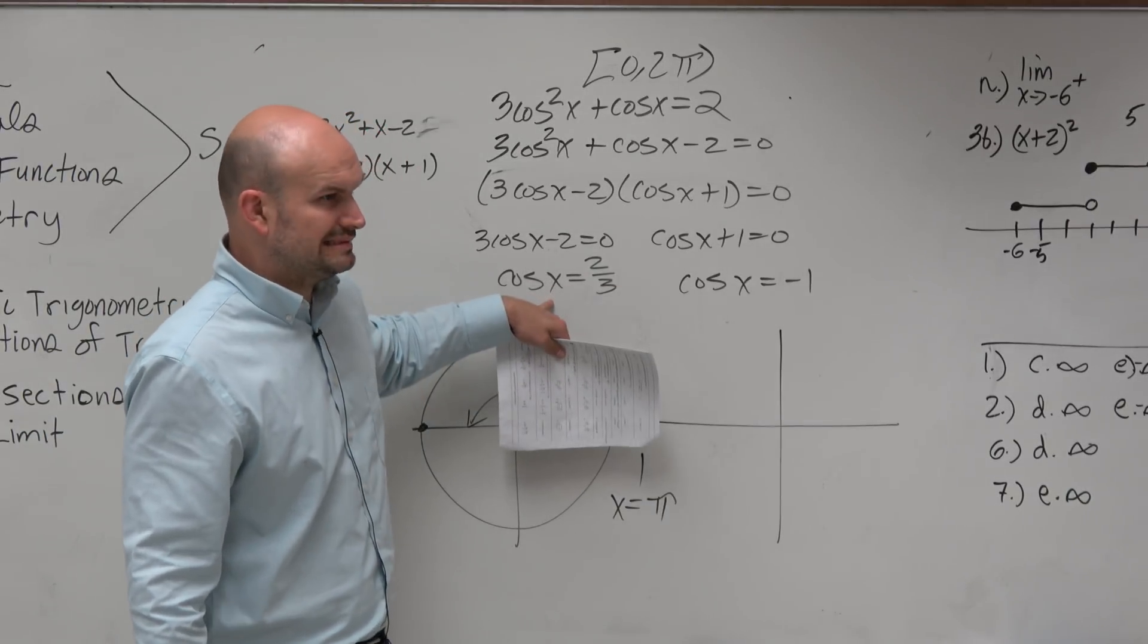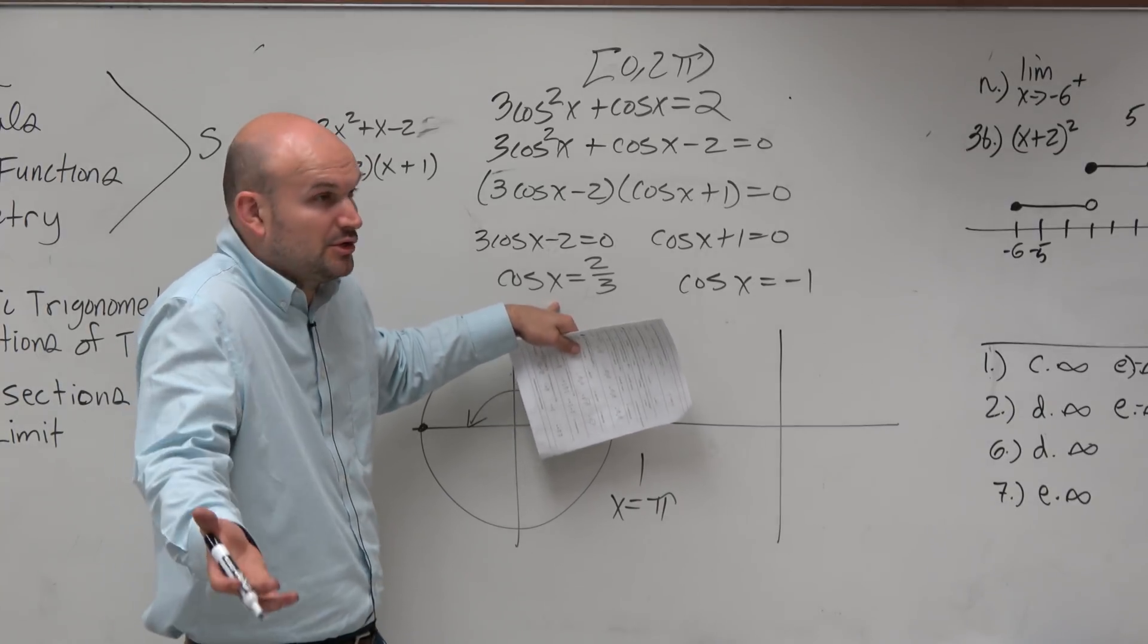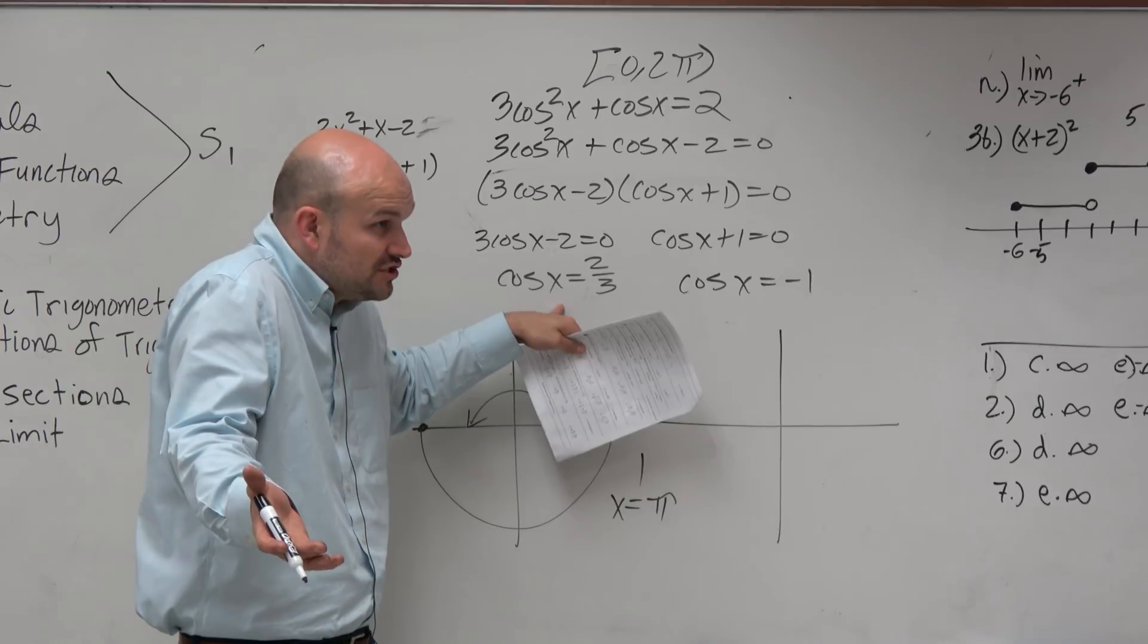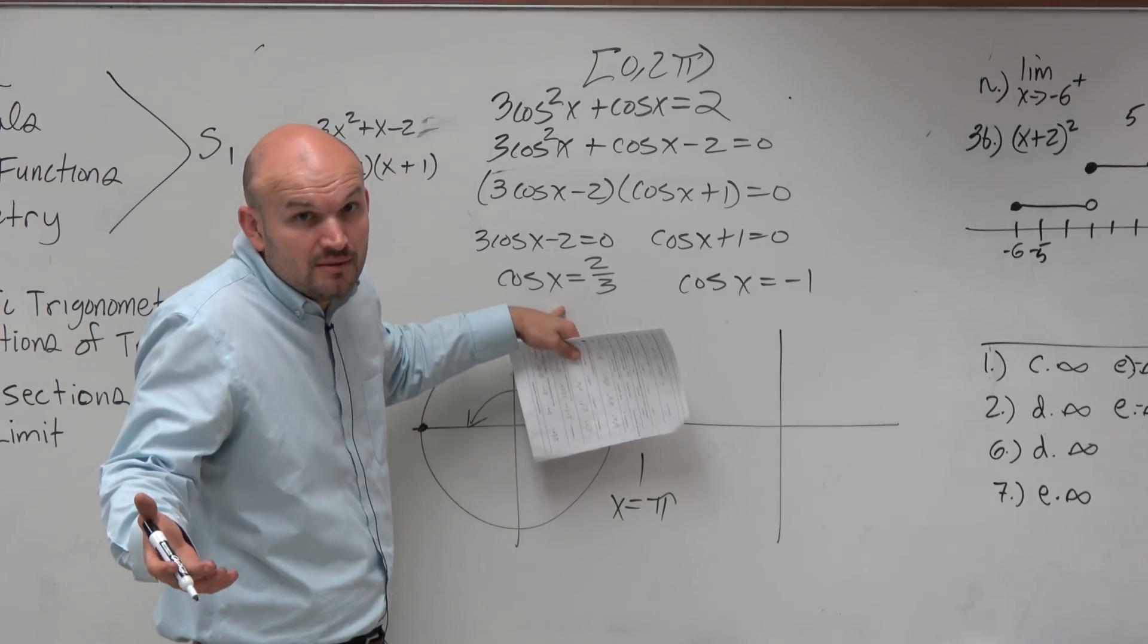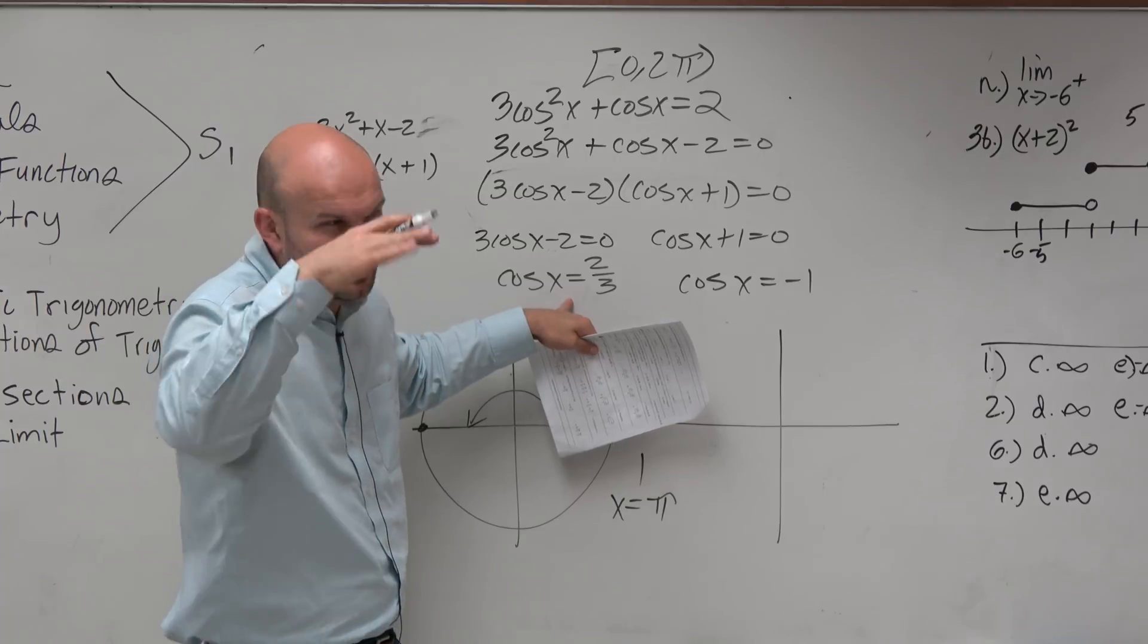So then we got this one. 2 thirds. We don't know 2 thirds. We're not familiar with 2 thirds. We're familiar with 1 half and square root of 3 over 2 and square root of 2 over 2. But we're not familiar with 2 thirds. But we know 2 thirds is like 0.66, right? It's less than 1.